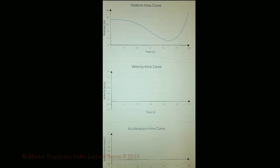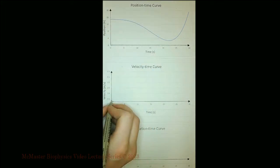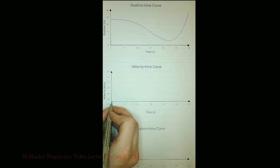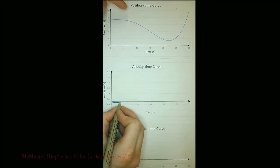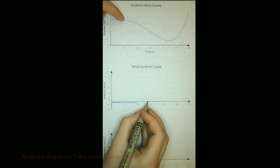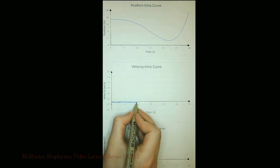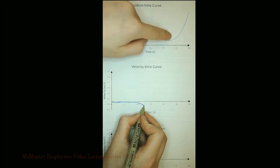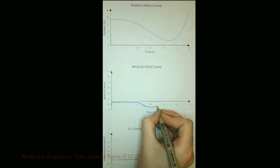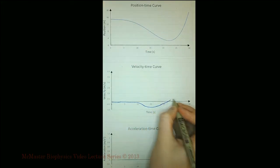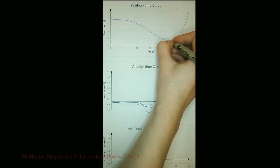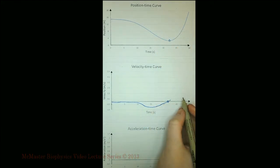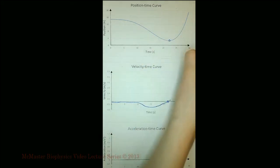To produce a velocity-time curve from a position-time curve, graph the slope of the position-time curve over time. At times 0 to 5 seconds, the slope is slightly negative but close to 0, so our velocity-time curve will be negative but close to 0. The slope becomes more negative between 10 and 20 seconds, so our velocity-time curve is further from 0 and still negative. At 22 seconds, the slope changes from negative to positive, so our velocity-time curve crosses the x-axis, moving from negative to positive.